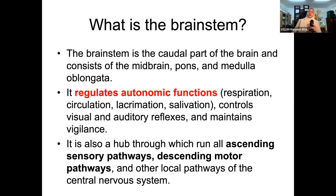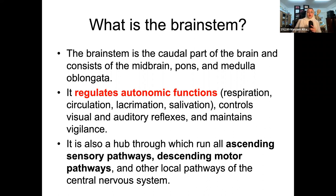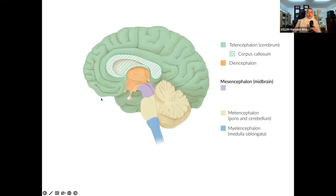The brainstem is very important because it regulates autonomic function, including respiration and circulation. It has specific receptors and reflexes — lacrimation, salivation, visual and auditory reflexes — and it maintains vigilance. It's a hub through which all ascending sensory pathways, descending motor pathways, and other local pathways of the central nervous system cross.